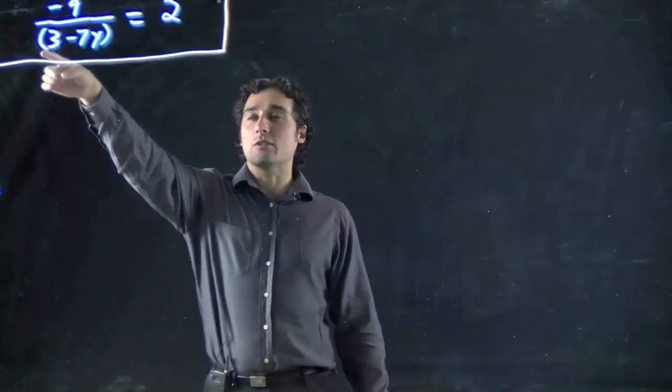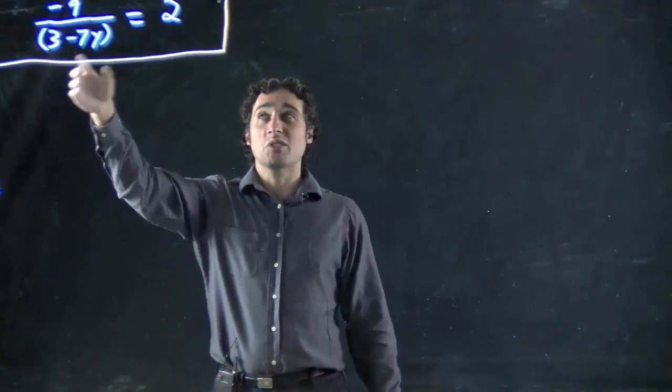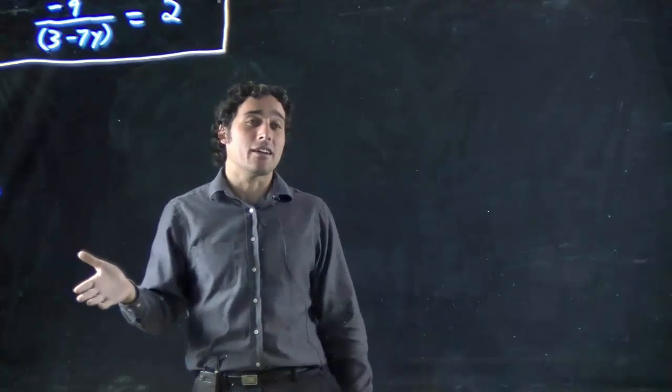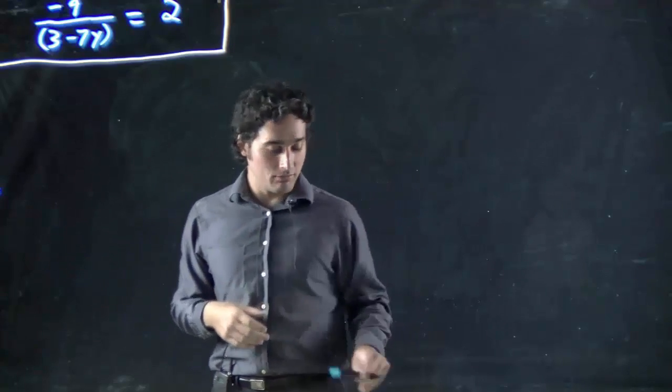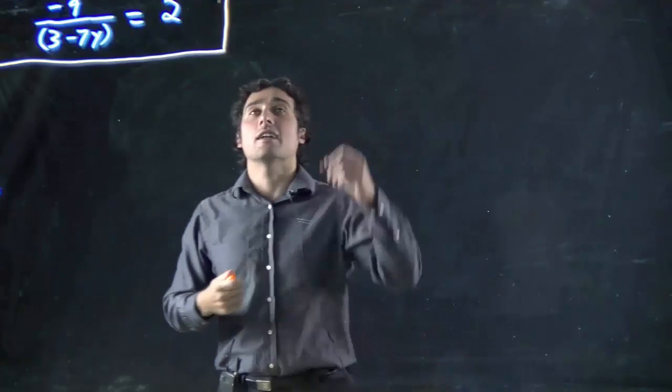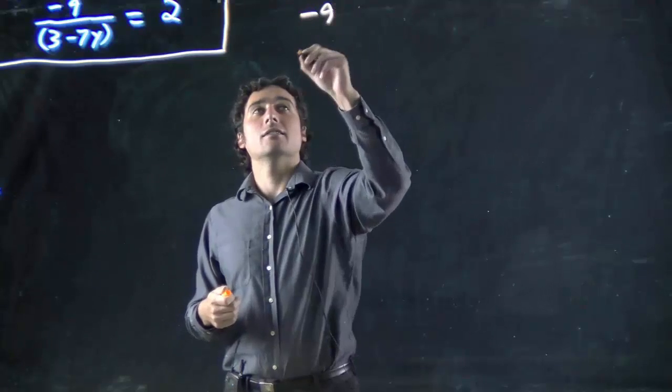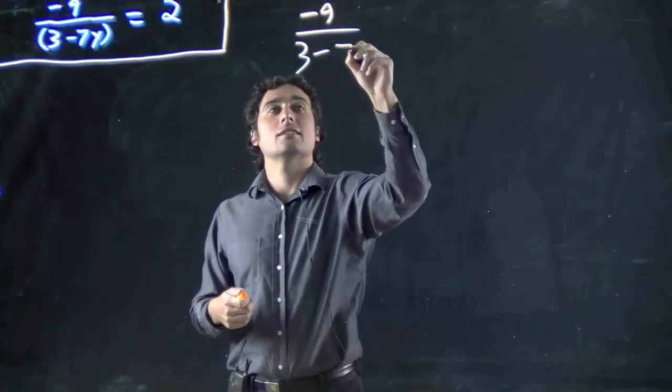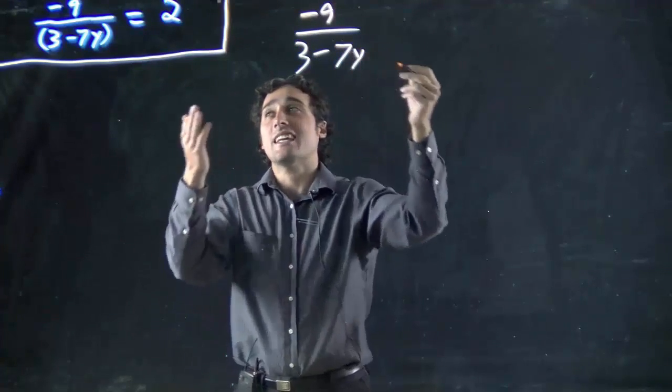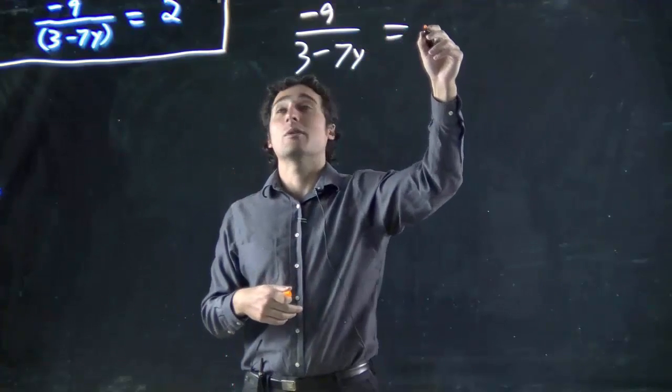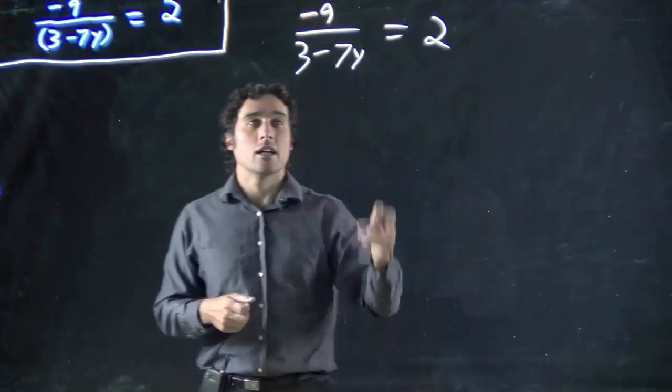But the funny thing is, there's nothing outside the bracket in this case, so it doesn't actually matter. It doesn't even need to be there. In fact, when I rewrite this equation, I'm going to rewrite it as minus 9 over 3 minus 7y. Because it's the same thing. There's nothing outside the bracket, we can eliminate it right away. All equals 2.